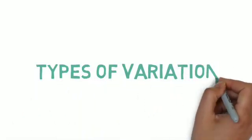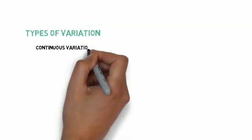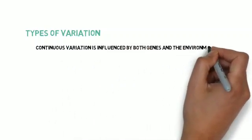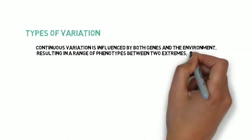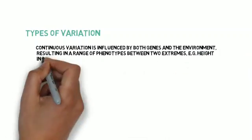Types of variation. Continuous variation is influenced by both genes and the environment, resulting in a range of phenotypes between two extremes, for example, height in humans.